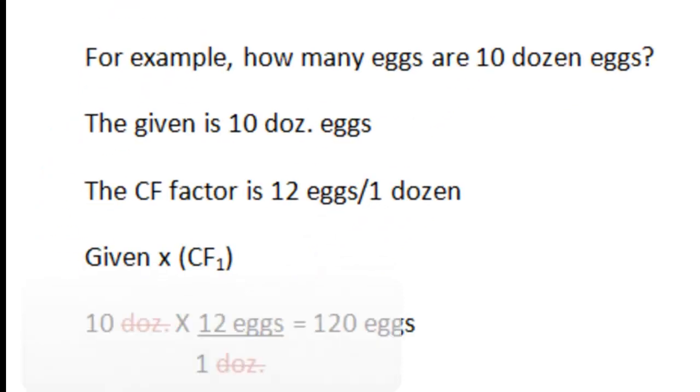So we'll take a very simple example. How many eggs are in 10 dozen eggs? Well, the given is the information in the problem, 10 dozen eggs. The conversion factor is 12 eggs per one dozen. So again...